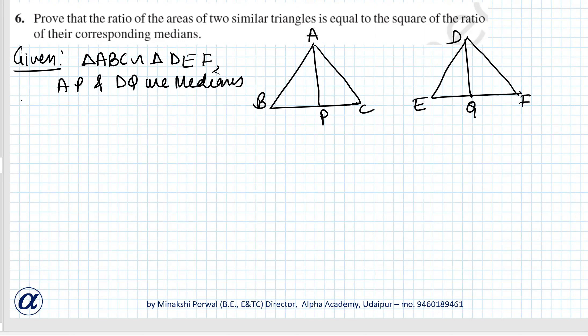To prove: area of ABC upon area of DEF equals the square of the ratio of corresponding medians, that is AP upon DQ the whole square.